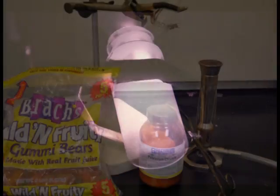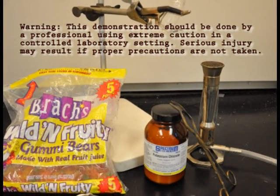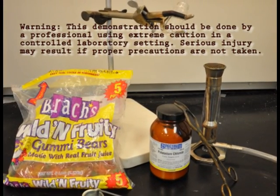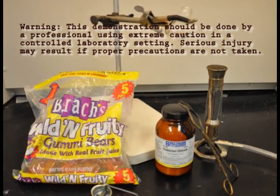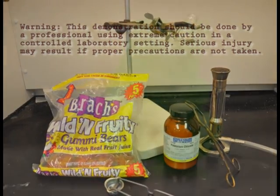The materials needed for the dancing gummy bear include potassium or sodium chlorate, a Bunsen burner, a Pyrex glass container, tongs, and of course one unfortunate gummy bear.